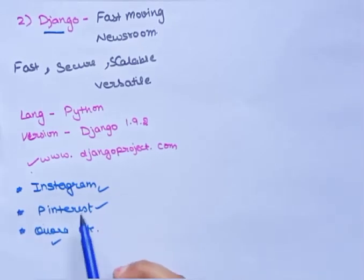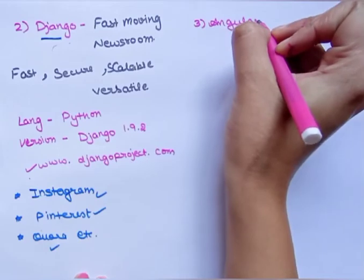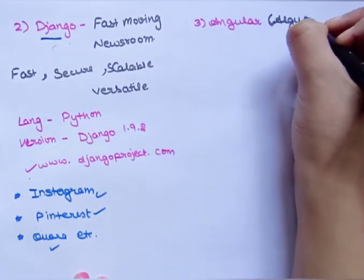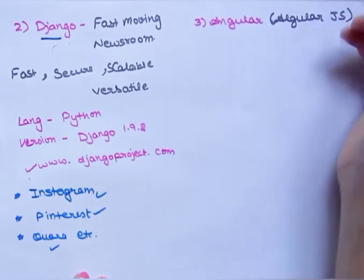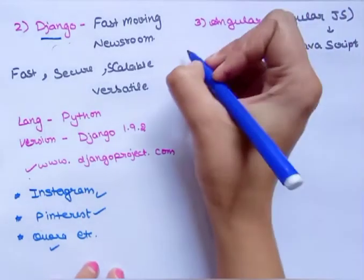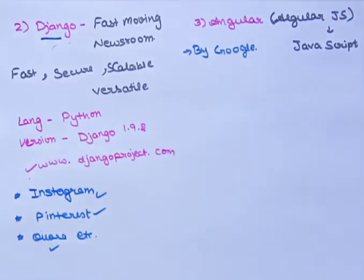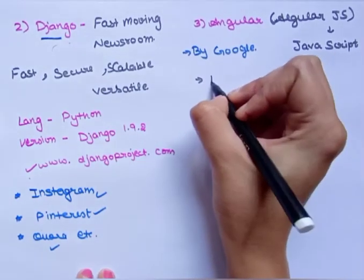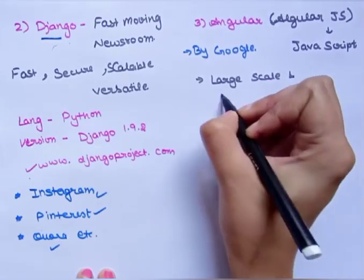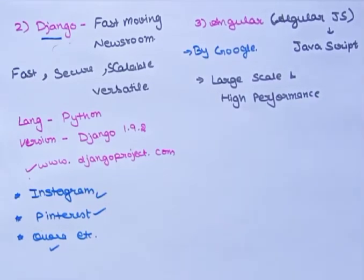The third framework is Angular, also known as AngularJS — JS means JavaScript. It is a framework made by Google which helps in building powerful web applications. It is also used to build large-scale and high-performance web applications while keeping them as easy to maintain as possible.